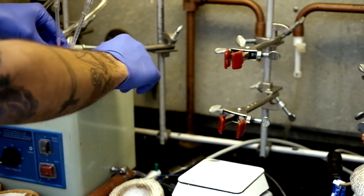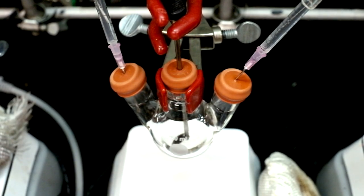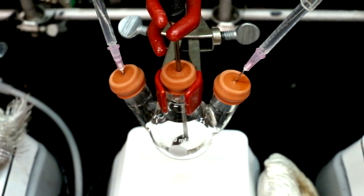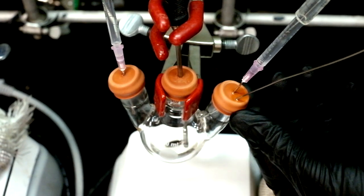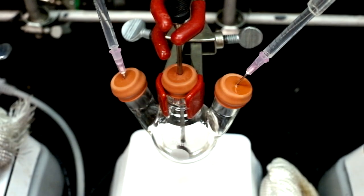Once the selenium solution has finished sonicating, it should be clear and there should be no powder left in the solution. At this point we can inject the room temperature cadmium solution into it. Set the flask aside and let the precursors mix.